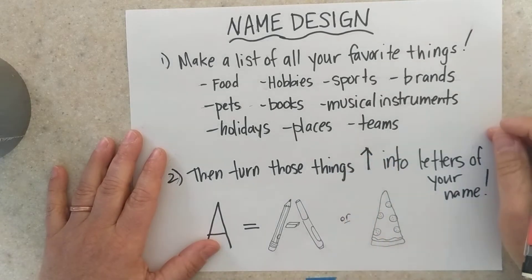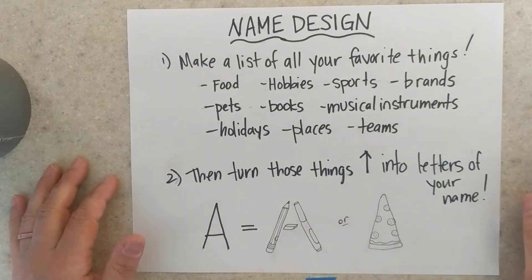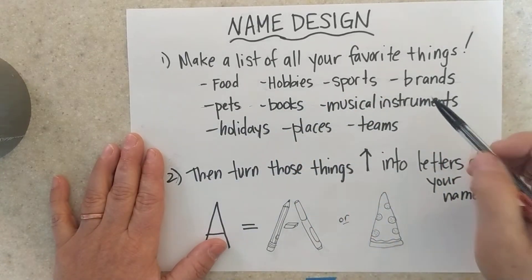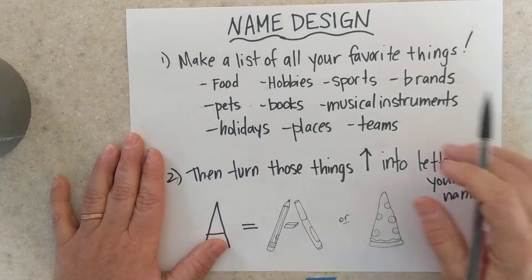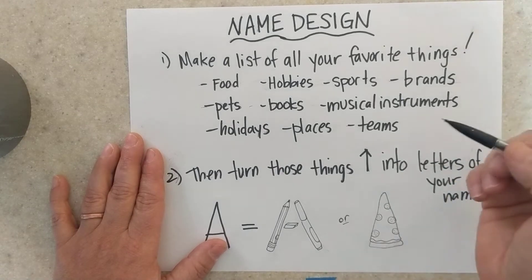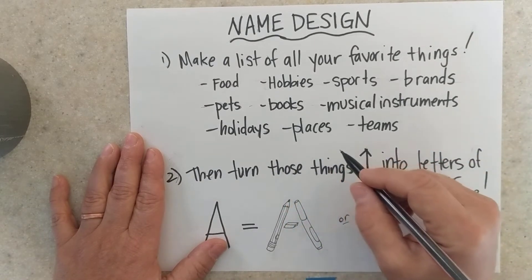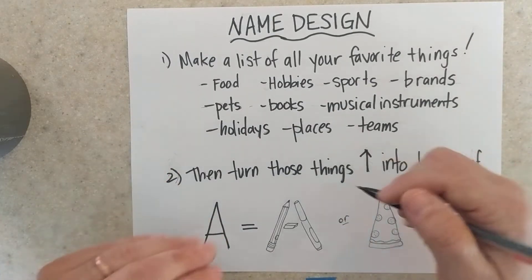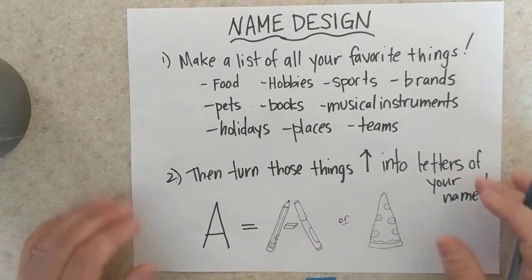I want you to make a list of all the things you can think of that you love. It can be food, hobbies, sports, brands of clothing, pets that you have or just animals in general that you like, books you read, musical instruments you play or music that you like, your favorite holidays, places you love to visit, teams you root for — it could be anything that has to do with you and what you like.